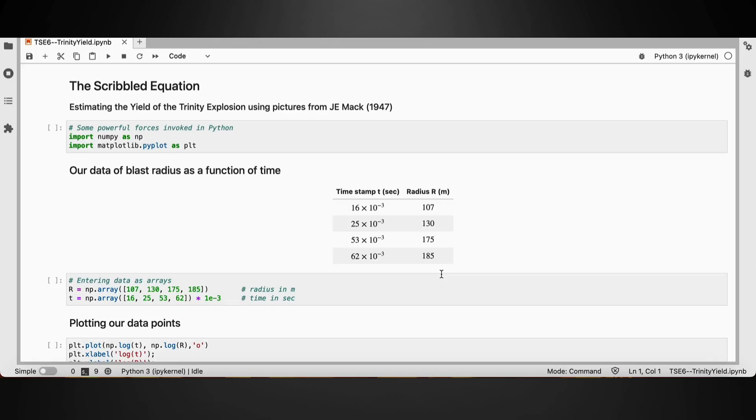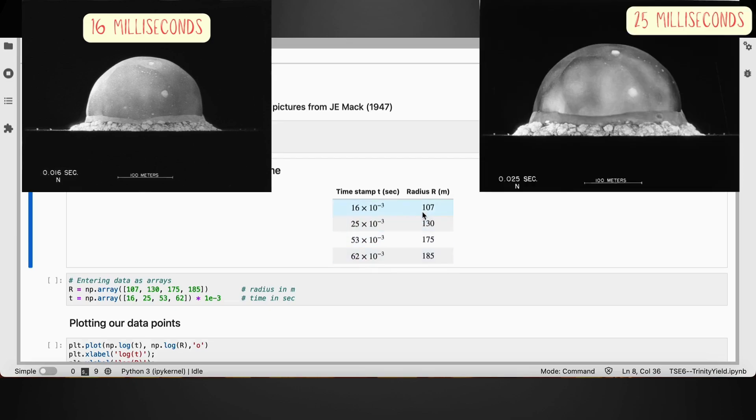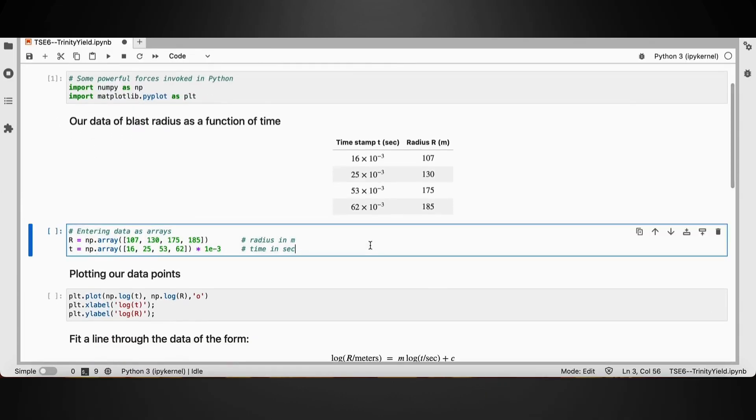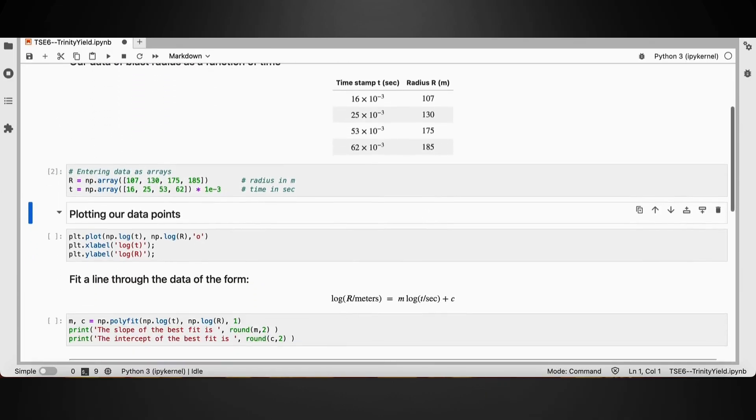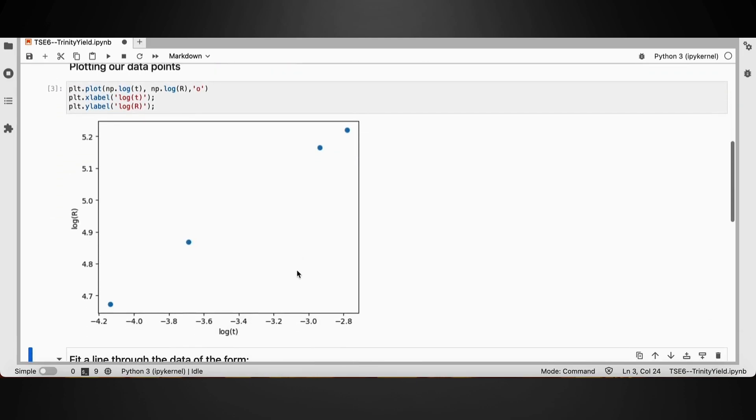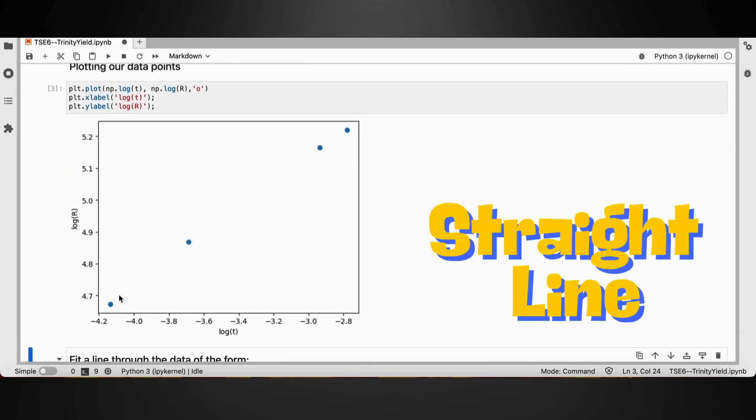To analyze this data, I have written some Python code to help us out. We'll start by importing some powerful packages. And here is our data: the radius of the blast wave as a function of the different timestamps where the radius has been read off the images from the Mack report. We enter our data as data arrays and when we plot it, log r versus log t, the data points indeed lie along a straight line, which is an encouraging sign.